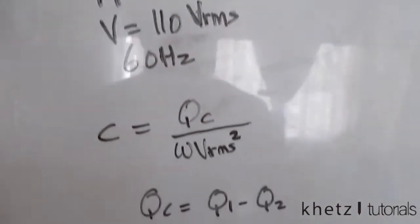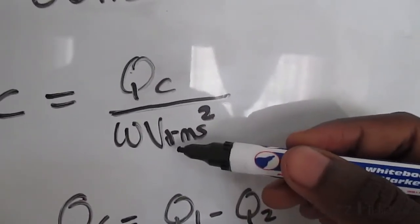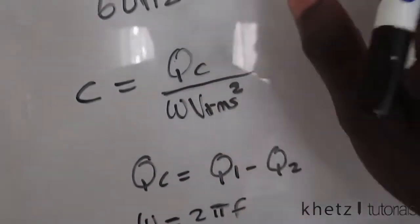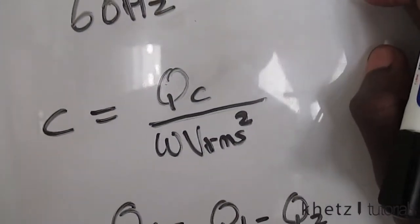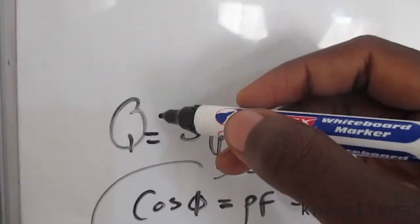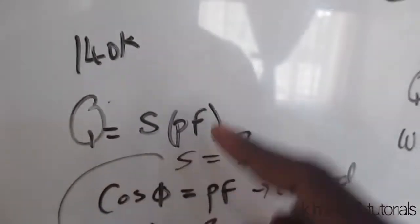Here's the formula which you're supposed to use: Qc divided by omega multiplied by VRMS squared. Here's the approach which you usually use when you do this. You first take your reactive power which you're given, so you're given 140, so I'm doing this part right now.